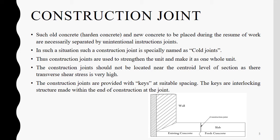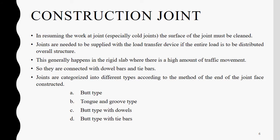In such a situation, the old or hardened concrete and new concrete are separated by unintentional construction joints, which are specially named as called joints. These joints are used to strengthen the unit and make it as one wall. These joints are provided with keys at a suitable spacing. These keys are interlocking structures made at the end of construction at the joint.